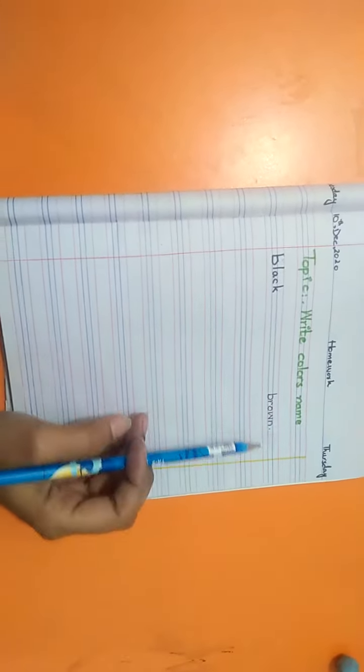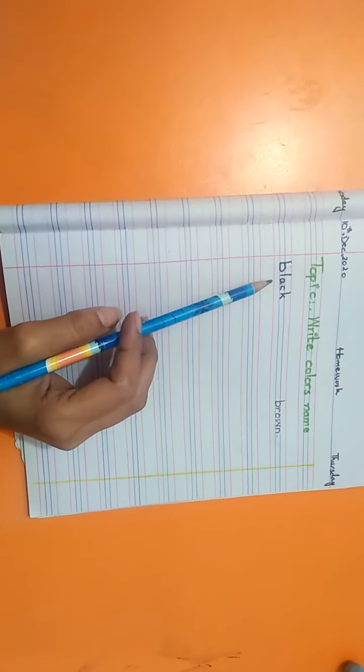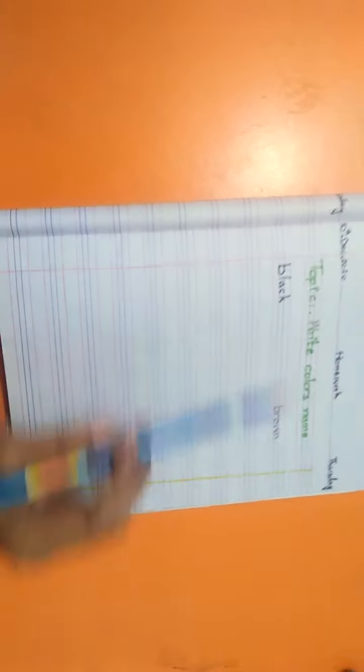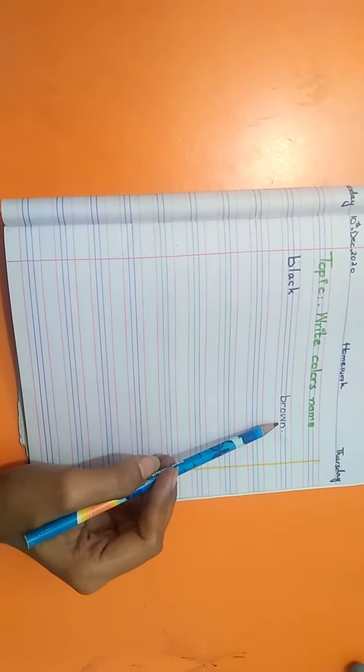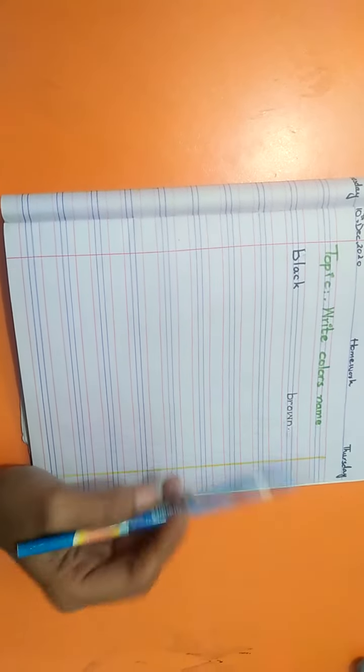Black. Brown. The first color is black. B-L-A-C-K. Black. The other one is brown. B-R-O-W-N. Brown.